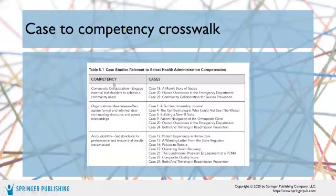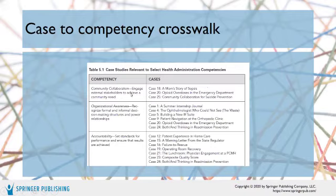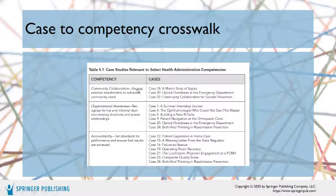To make it easy for instructors to choose the right case, we have a case-to-competency crosswalk. Chapter five goes into great detail on the competencies of various professions. As you can see on screen, we have a health administration competency crosswalk listing all the competencies a program might need to address — such as community collaboration, organizational awareness, or accountability — and matching them to the cases that address those competencies, such as case 18, 'A Mom's Story of Sepsis.' Table 5.1 lists all competencies with cases matched, making it easier for instructors.